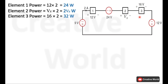Next is element 3. Voltage across element 3 is 16 volts and current through it is 2 amperes. Again, this current is entering from the positive terminal, so it will be taken with positive sign. The power of element 3 will be 16 multiplied by 2, which is 32 watts, and because of the positive sign this power is being consumed by element 3.